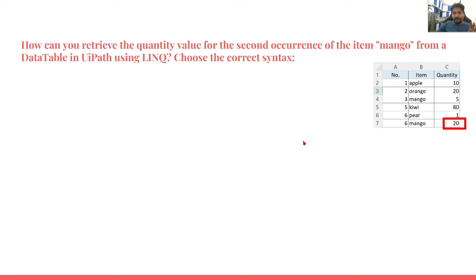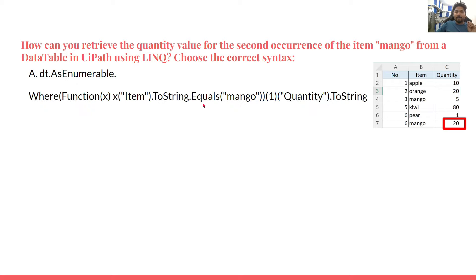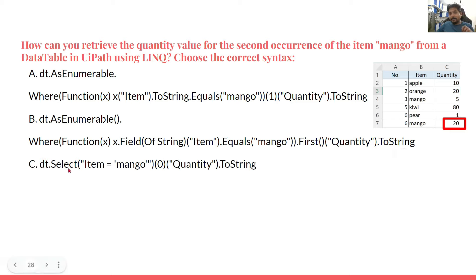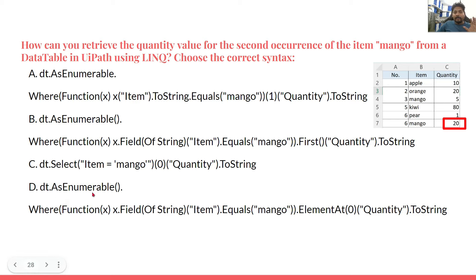Let me show you some of the options. The first option: dt.AsEnumerable().Where(Function(x) x("item").ToString = "mango") — is that a right syntax or not? The second option uses Where with Field(Of String) and .First() to get the quantity. The third option uses dt.Select(). The question is: can I filter using .Select() or do I always have to use .Where()? The fourth option uses dt.AsEnumerable().Where() with ElementAt. So which of these four options is right?